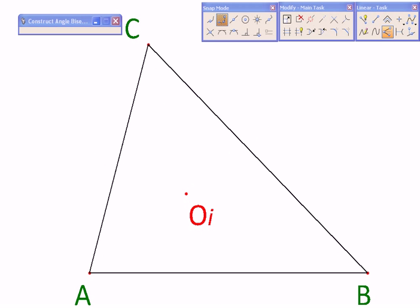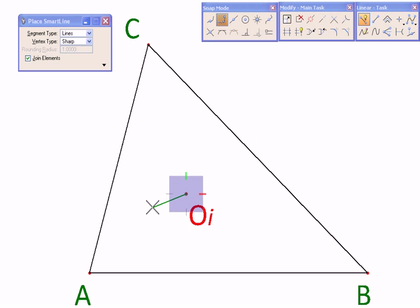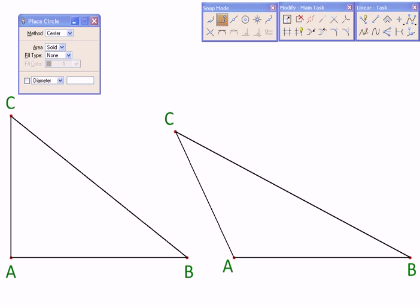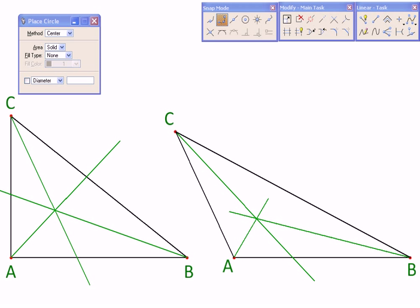Once we have the in-center, we can drop a perpendicular from the in-center onto any one of the sides like this, and then we can use this as a center and this perpendicular as the radius to draw our in-circle. For the other two cases we just repeat the construction: first we draw the angle bisectors, they meet in a point that is our in-center, from that we draw any one perpendicular to get the radius of the circle, and then draw the in-circle.